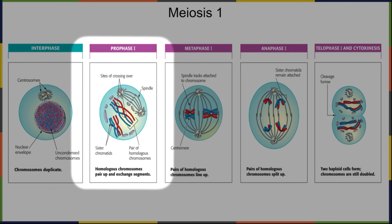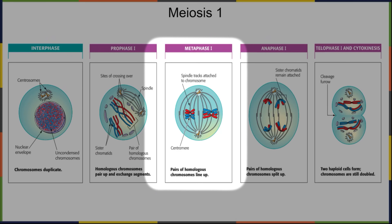In metaphase one, the homologues have joined together in the middle of the cell, but there's a key difference from mitosis. In mitosis, pairs lined up so that when they separated, each side of the cell would get exactly the same set of chromosomes. In meiosis, the homologous chromosomes — which have different information but the same kinds of loci and genes — line up so that when separated, one side gets either one pair of homologues or the other.